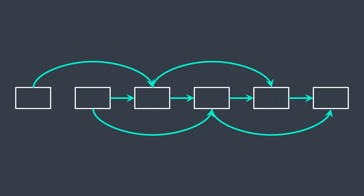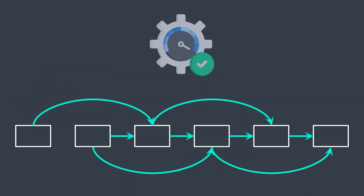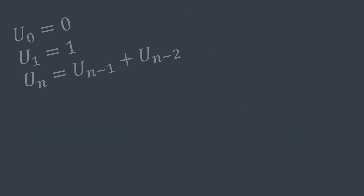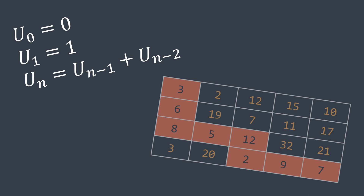Dynamic programming is a very interesting and powerful algorithm optimization technique. In this video, to better understand how DP is used to optimize solutions, we will see two classic dynamic programming problems: the Fibonacci sequence problem and the minimum cost path problem.